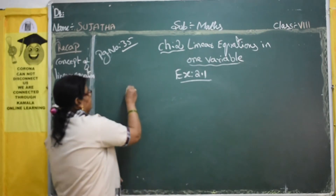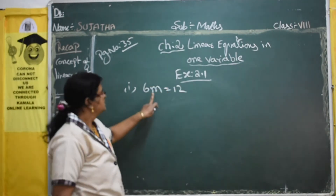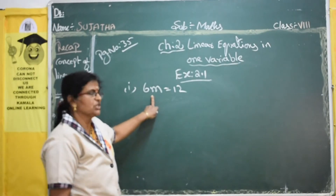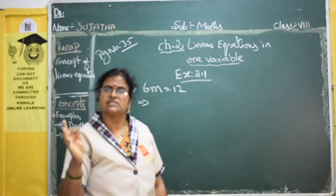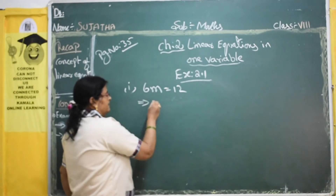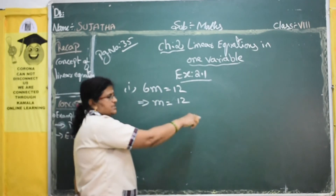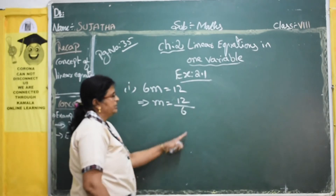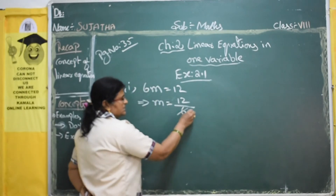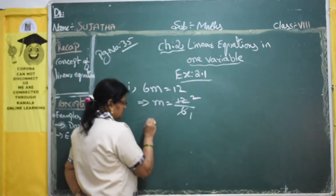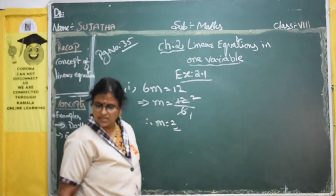Exercise 2.1, first one: 6m equals 12. Here m is the variable. This is in multiplication form. When multiplication moves to the other side, it changes into division. Since 6 twos are 12, therefore m equals 2. That is how we solve these sums.